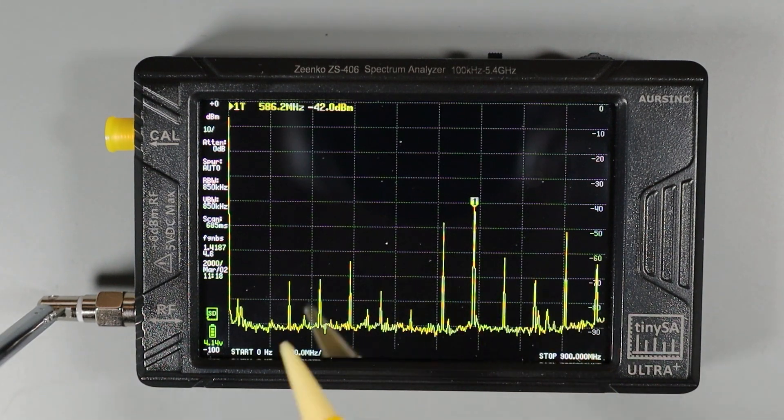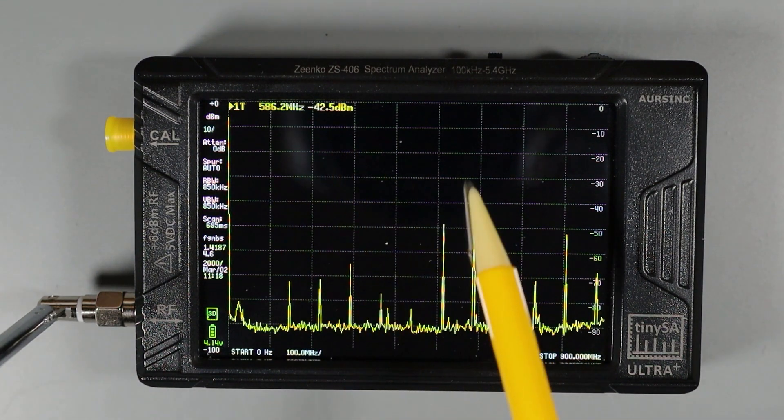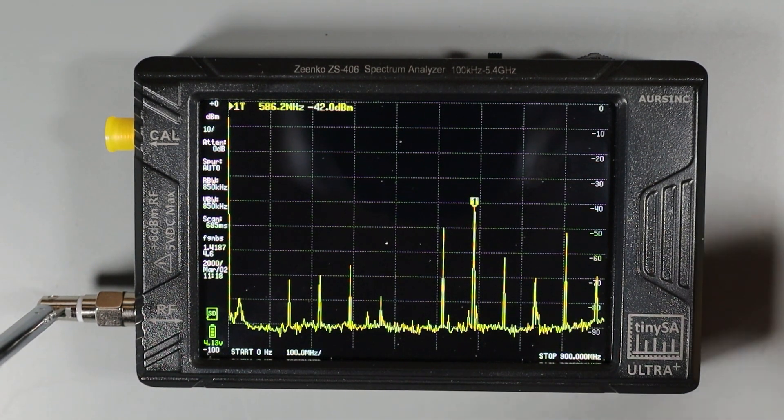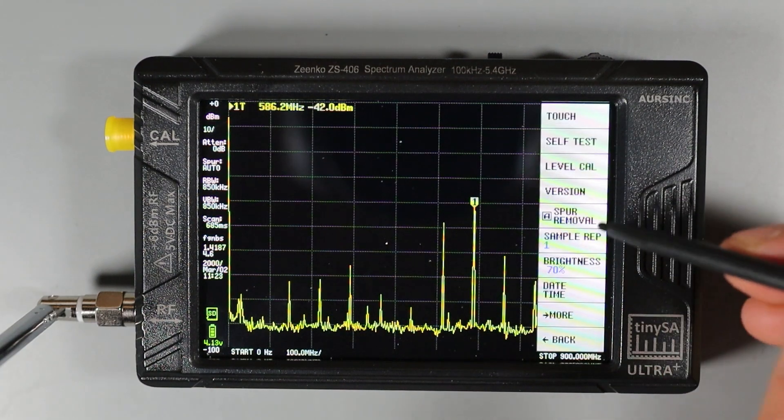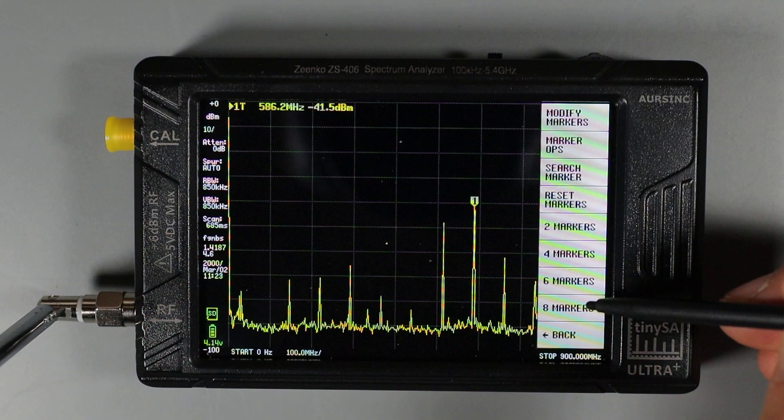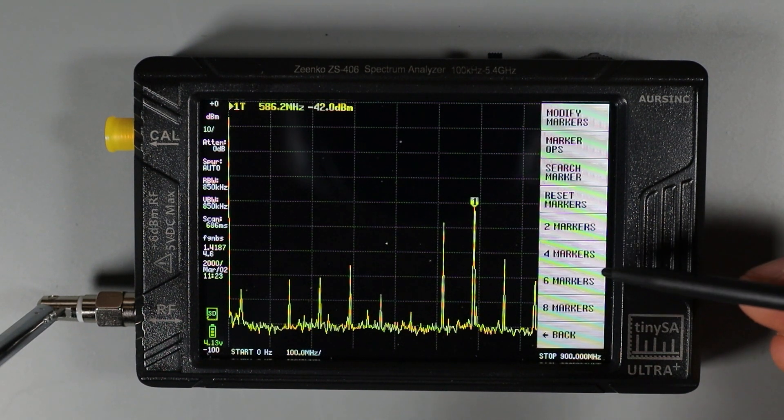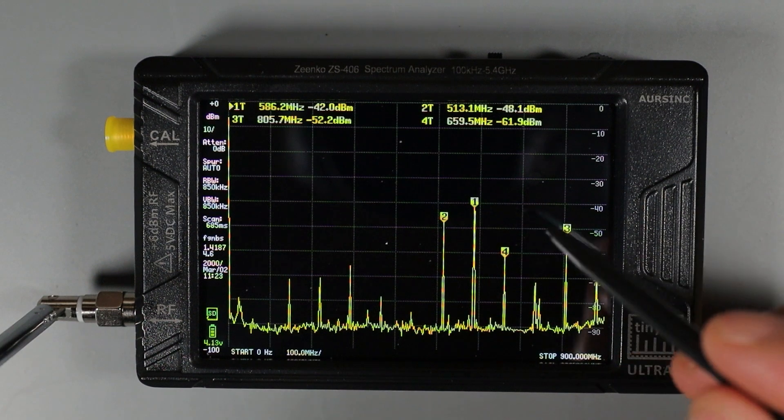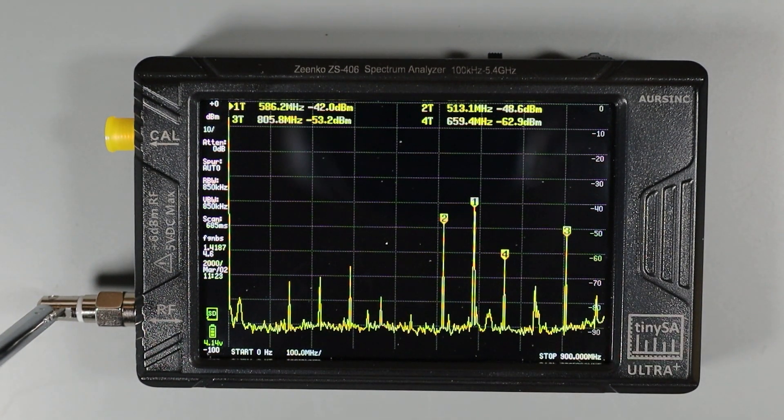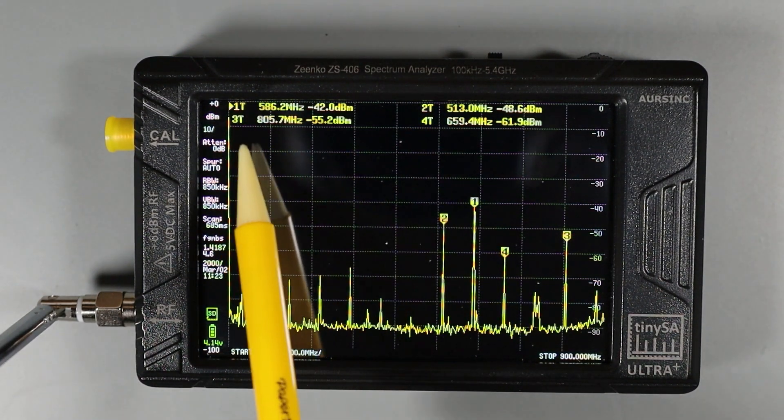We may run into situations where there are multiple signals showing up on the screen and we want to see measurement information for many of them at one time. We can go into the TinySA main menu and choose marker and then choose from these presets down here to add or remove markers. So for example, if I choose four markers, we can now see we're getting four measurements at the four highest signal spikes and the measurement levels are all shown up here for marker one, two, three and four.